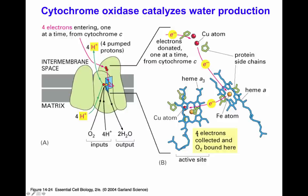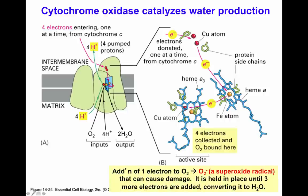In this system, four different electrons are collected because molecular oxygen requires four electrons and four protons to be completely reduced into two molecules of water. This is important because if a single electron were passed to molecular oxygen alone, it would generate a superoxide radical, which is very damaging to the cell. Therefore, the electrons are held in place until all four are present to allow the conversion of one molecular oxygen molecule into two water molecules.